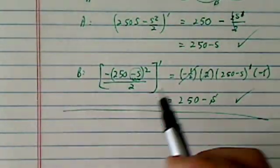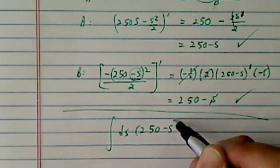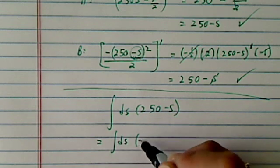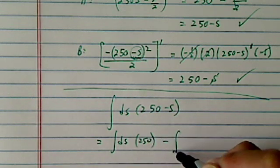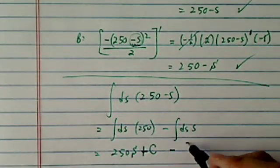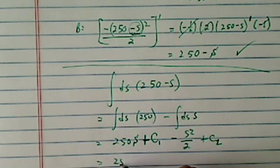Okay, now going backward, if we were to integrate this one, 250 minus s, let's see if we can get both of the answers. Okay, first thing you can do is integrate 250 minus ds and s. Then this one gives you 250s plus a constant. I don't care what the constant is. Okay, minus s squared over 2 plus another constant.